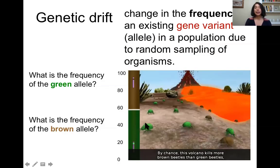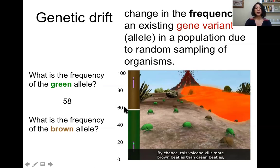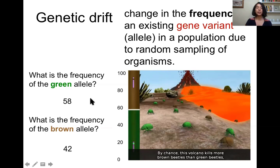After this event, we also have a change in allele frequencies. Looking at this figure, the allele frequency of the green allele is approximately 0.58, and the brown allele approximately 0.42. After the brown allele gets wiped out by chance, the green allele frequency increases to fixation.